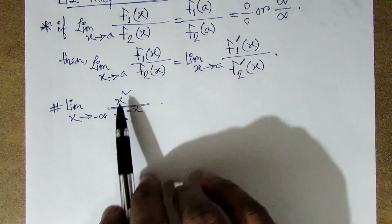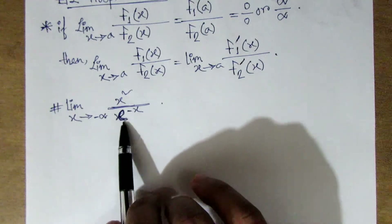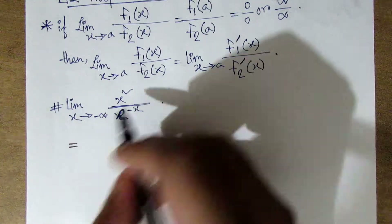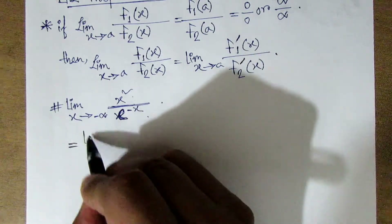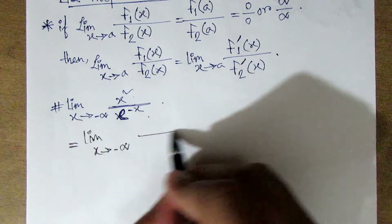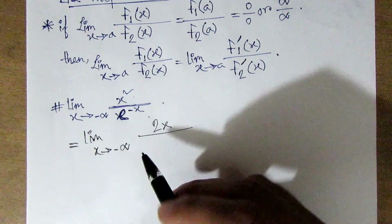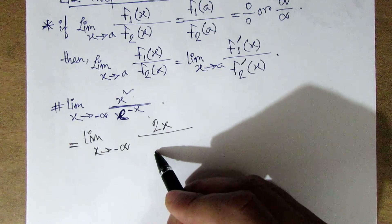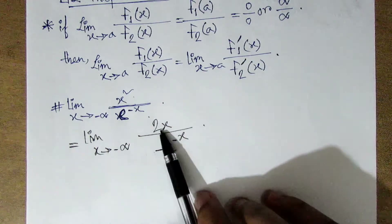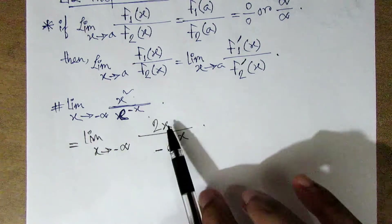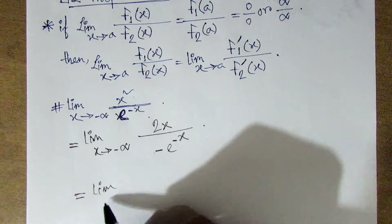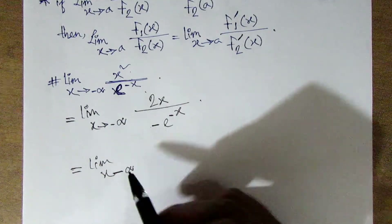Here we have an infinity minus infinity form, so infinity over infinity is an indeterminate ∞/∞ form. If the ∞/∞ form occurs, we apply the differentiation rule. So here we have ∞/∞, and we take the limit as x approaches negative infinity.